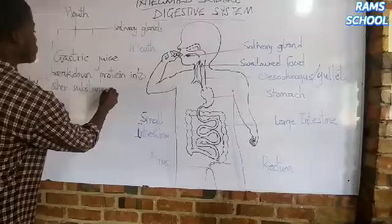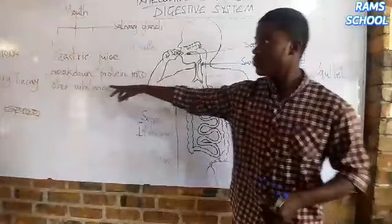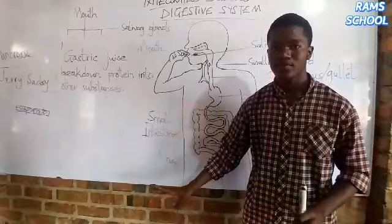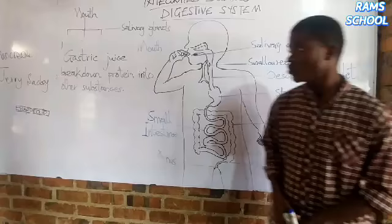Since the gastric juice breaks down protein into other substances, protein digestion begins at the stomach, and starch digestion ends there.